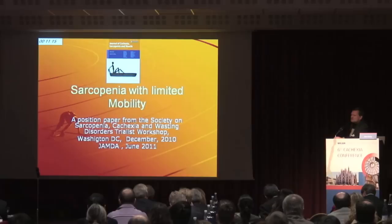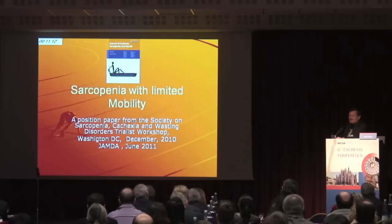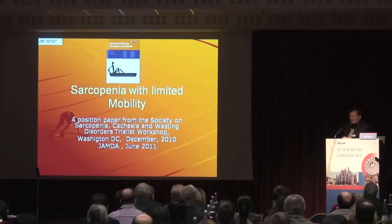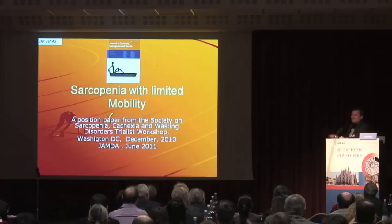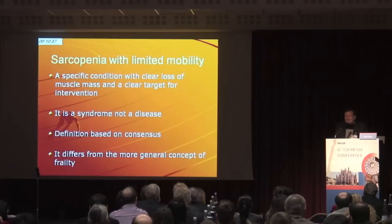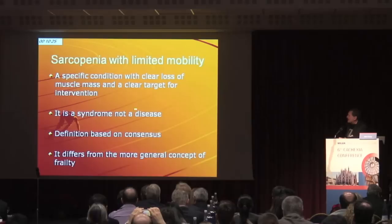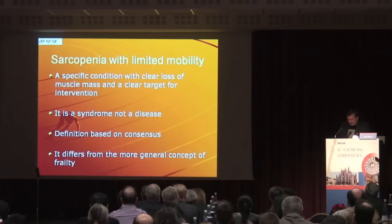So what did we show at the meeting? We came up with the term 'sarcopenia with limited mobility.' The feeling in the end was that sarcopenia should be kept as it was. One of the real reasons was that when we tried to change the term 'cachexia' to 'wasting disease' at a previous consensus meeting, every European told us we can't do that. Now the Europeans think they can take a term from the literature and change it to anything. I really believe we should be careful about how we define things. The consensus was sarcopenia with limited mobility — a specific condition with clear loss of muscle mass and a clear target for intervention. It's a symptom, not a disease.